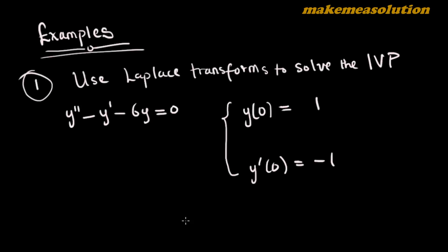Welcome to this video. We are going to look at how to solve differential equations — an initial value problem — using Laplace transforms. We have to solve y'' minus y' minus 6y equals zero. This is a homogeneous case because the right-hand side is equal to zero, and we are given initial conditions. Let's use Laplace transforms to solve this problem.